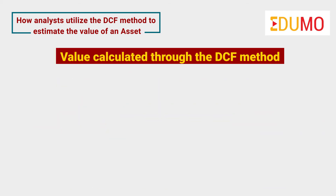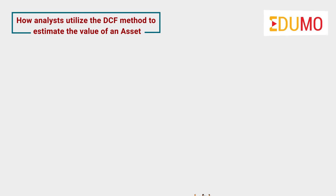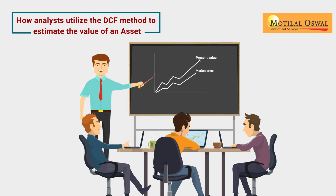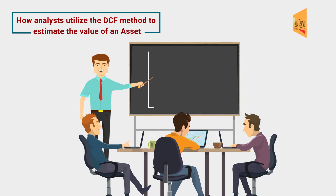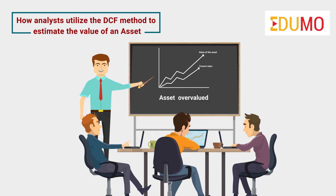If the value calculated through the DCF method is higher than the current asset cost, then the asset is a good value buy. This means the present value of its future cash flows is more than the market price, and hence it makes sense to buy it at a cheaper value now. But similarly, if the value of the asset turns out to be higher than that calculated, then the asset is said to be overvalued.